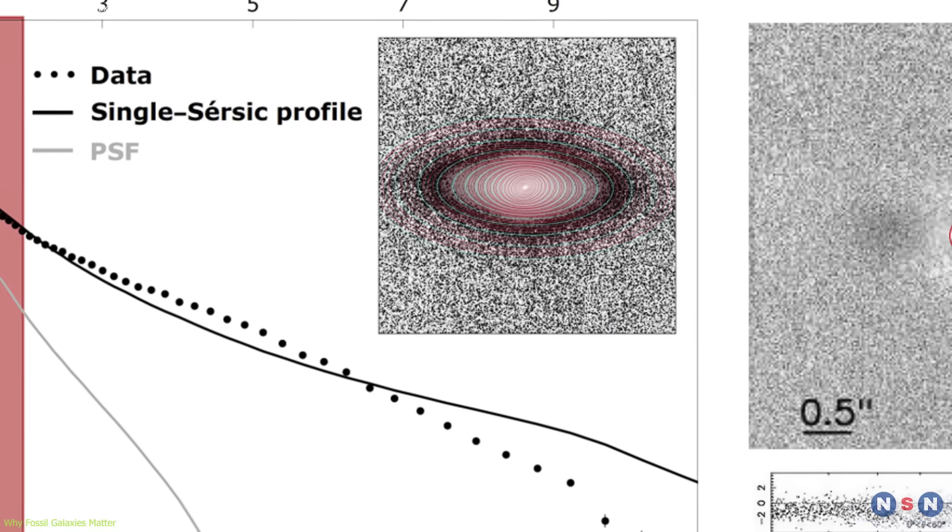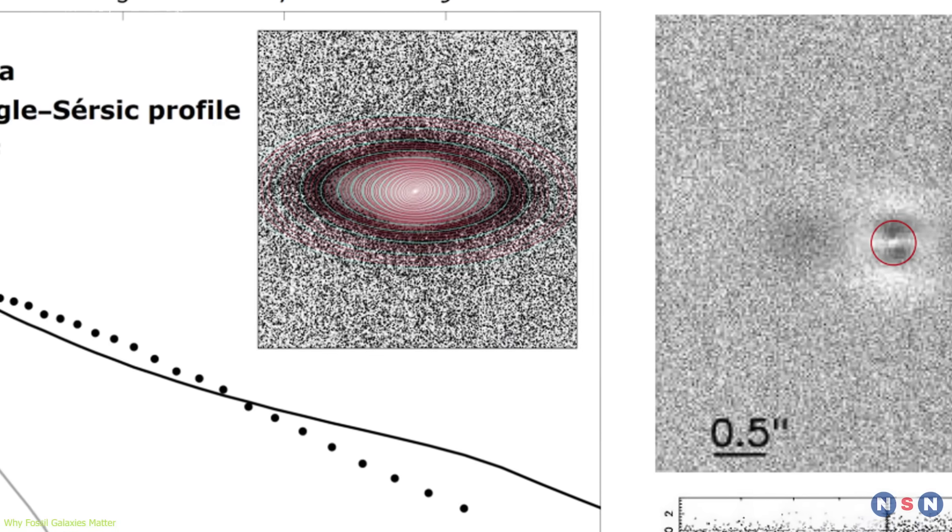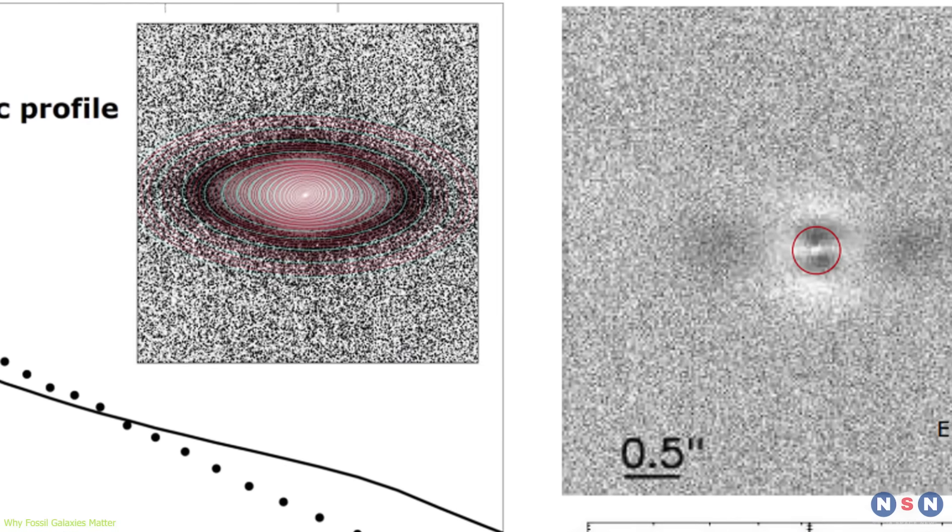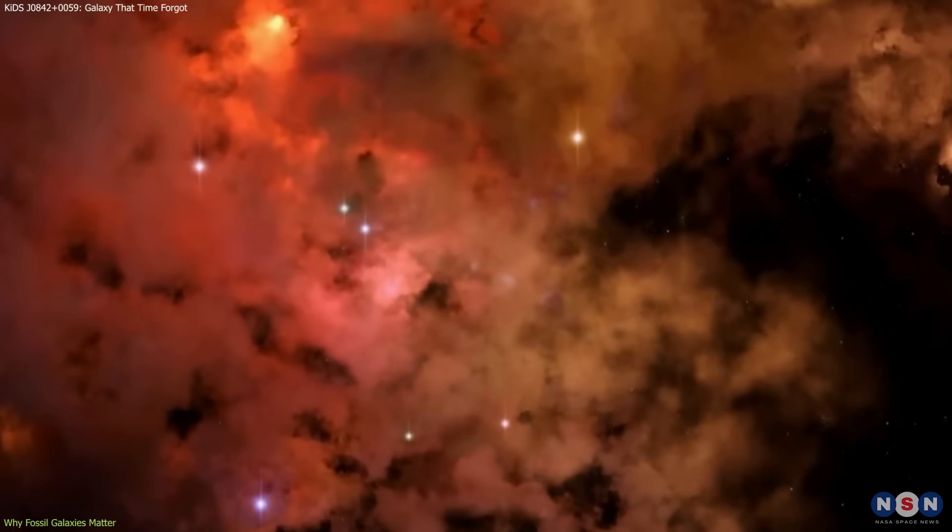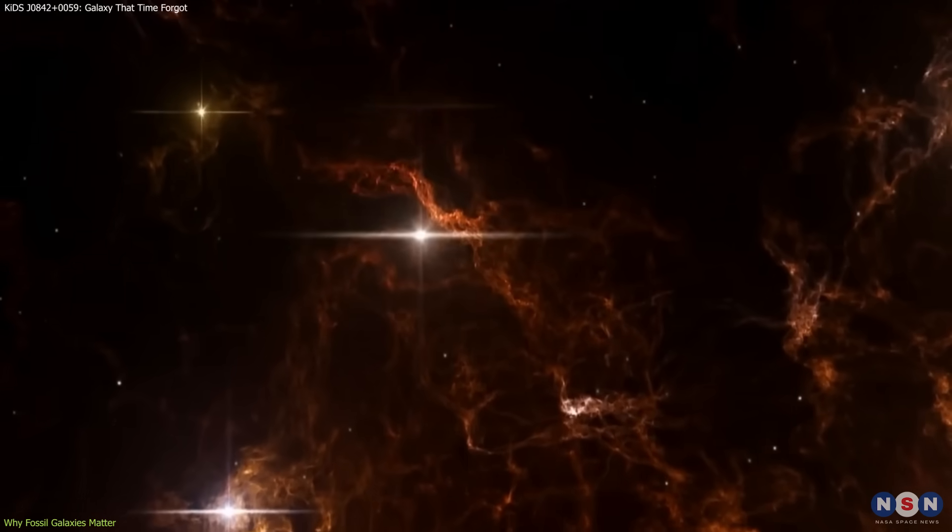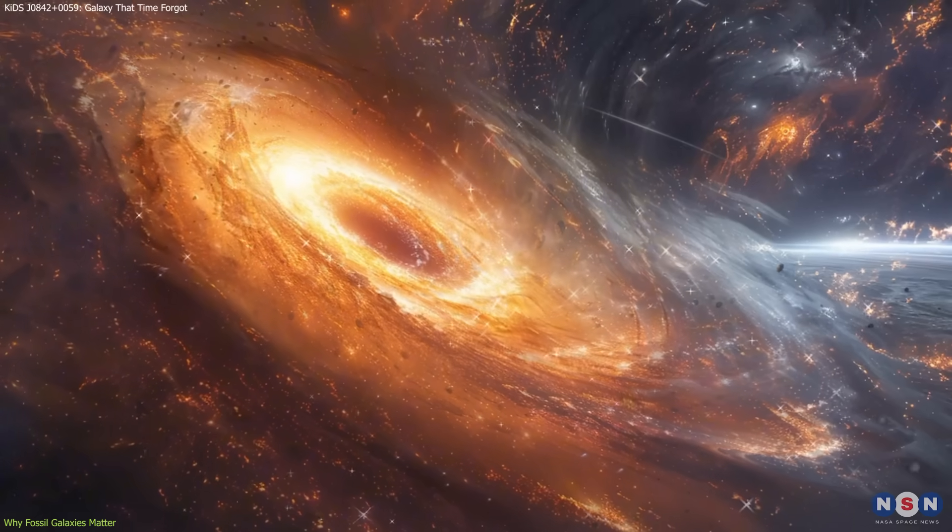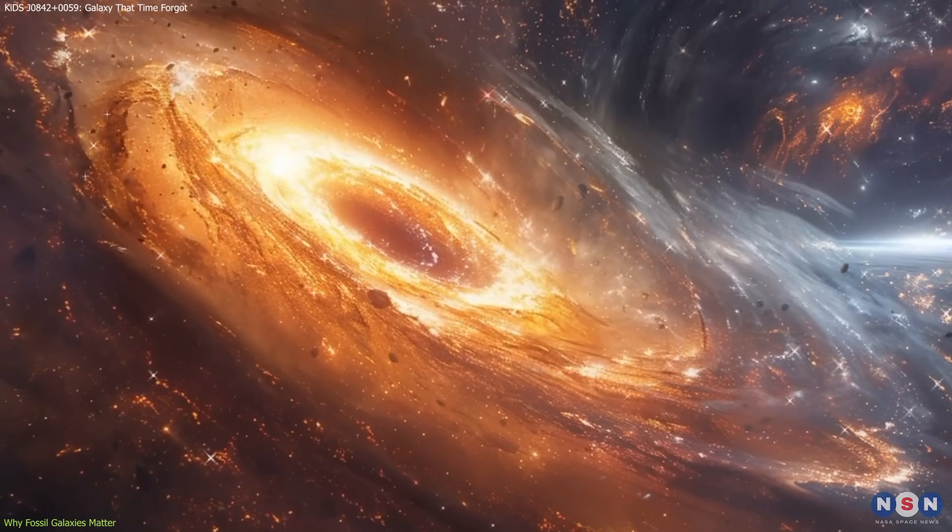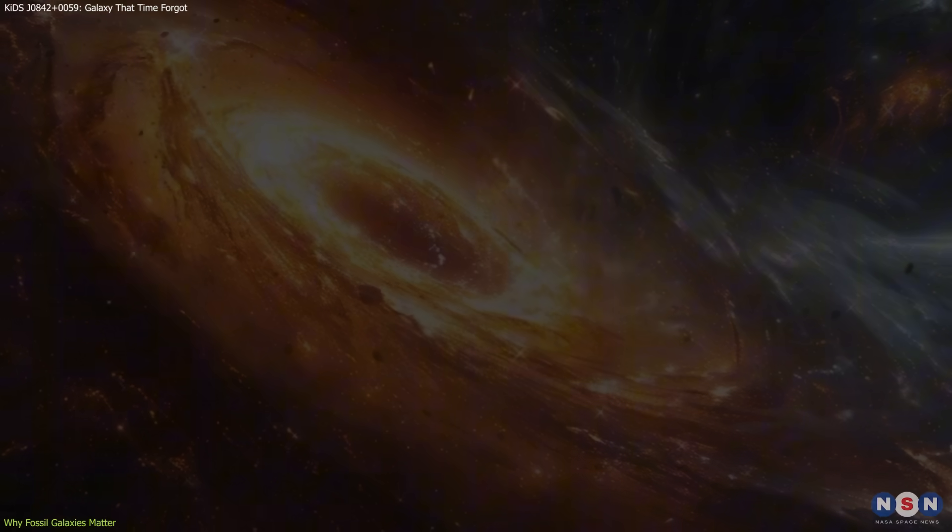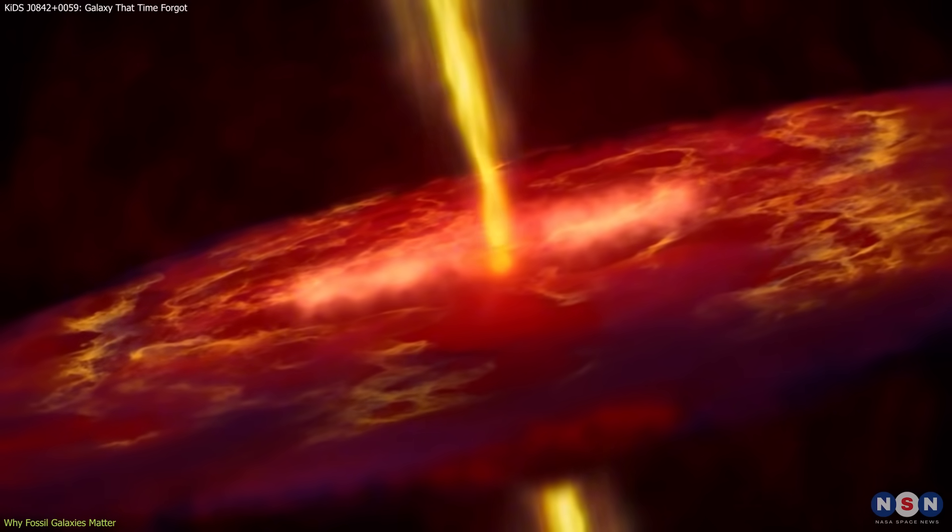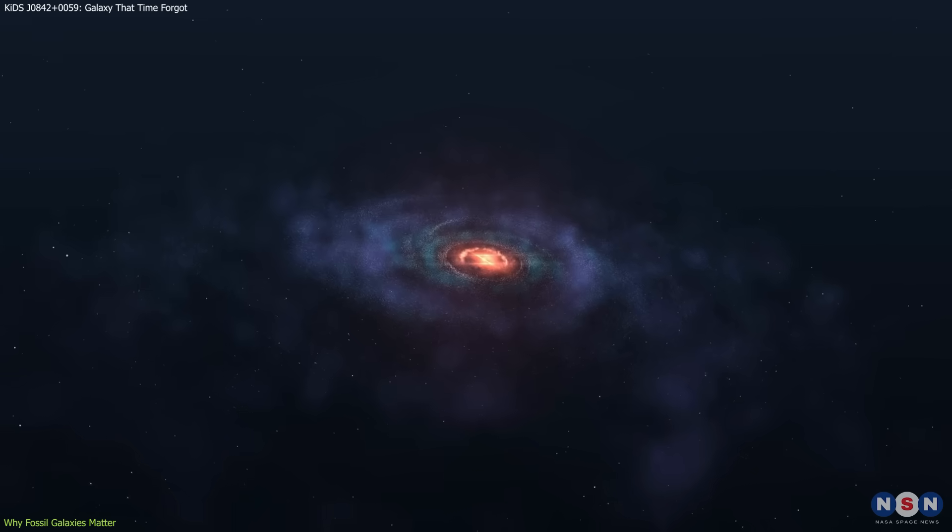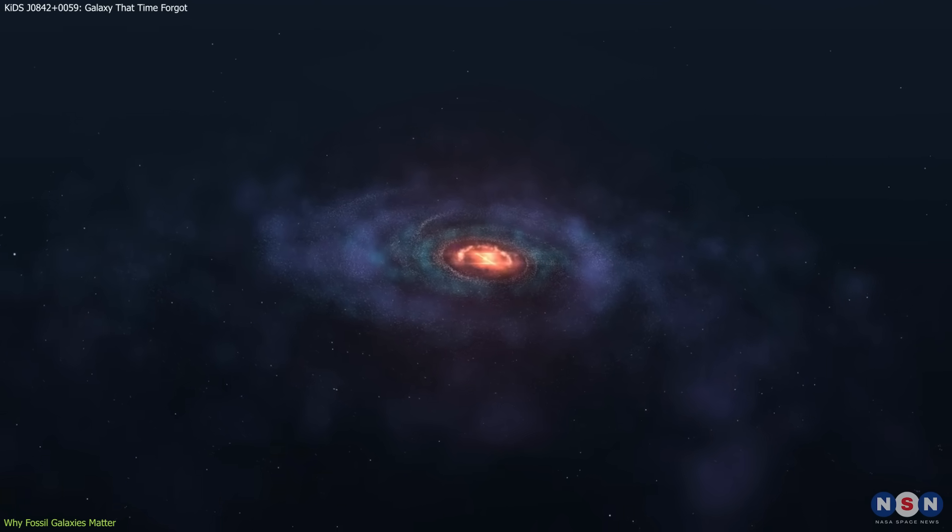Another key insight comes from its chemical composition and star formation history. The galaxy shows signs of intense star formation that occurred quickly and ended early. One possible explanation is the presence of a supermassive black hole, which could have heated or expelled gas, halting further star birth. Without cold gas to form new stars, the galaxy remained dormant.